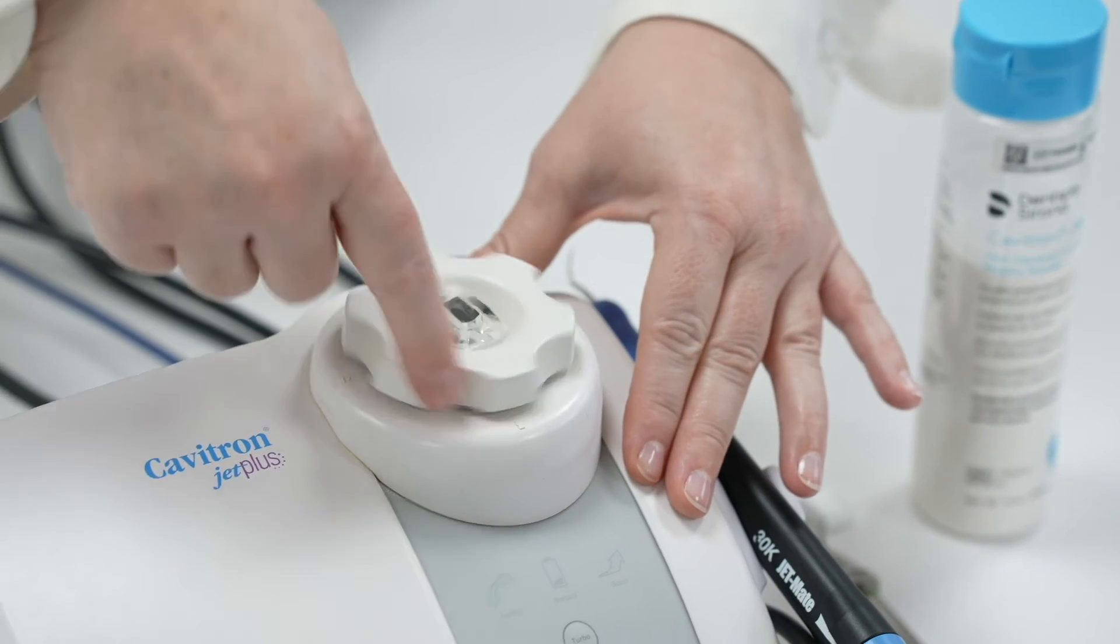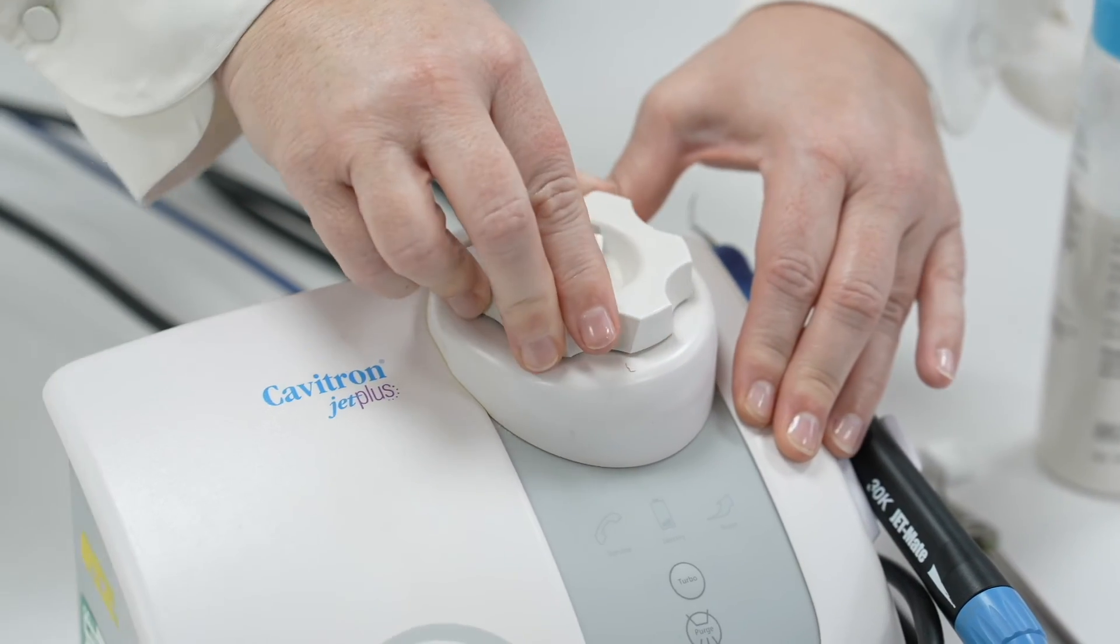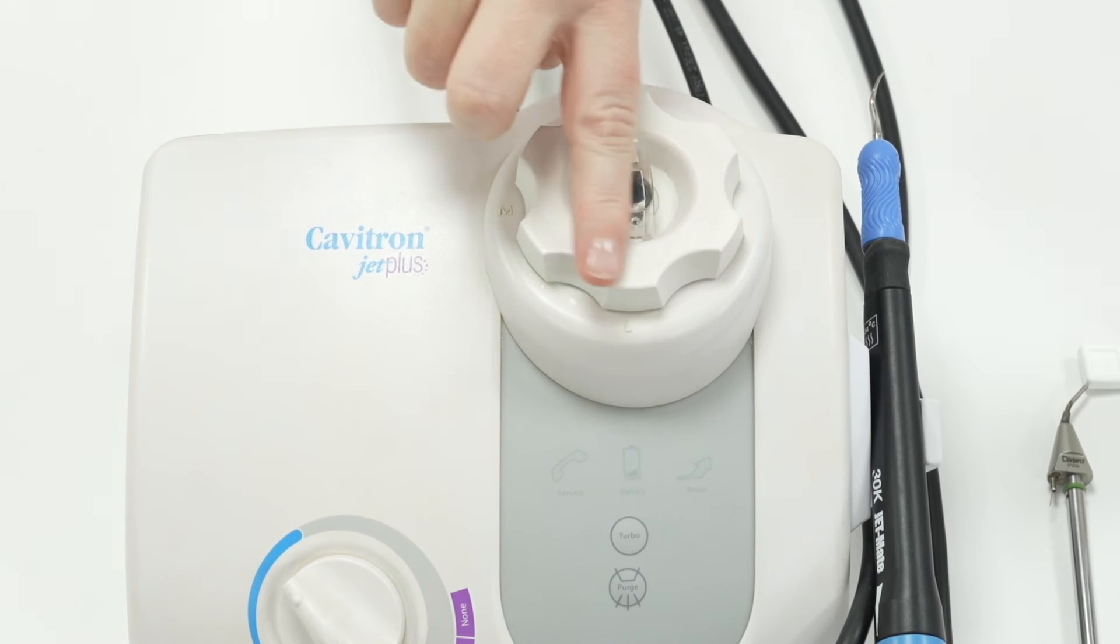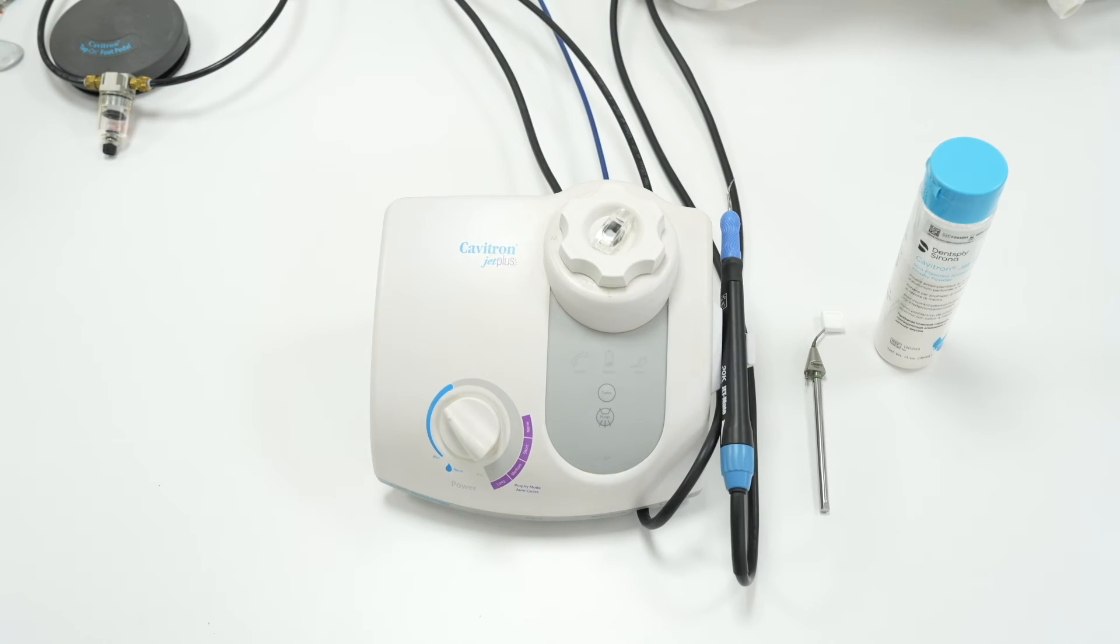Once the powder pot has been filled with powder and the lid is on tight, switch the Cavitron Jet Plus on to pressurise the system. The dial on the top of the powder pot indicates how much powder you'd like to come through the system. This dial should be checked before every use and should be set between low and medium, because when you re-tighten the lid you can sometimes accidentally move the dial.